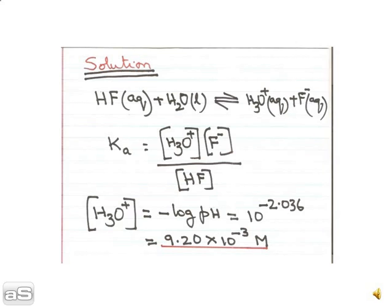We already know that if you are given the pH value, we can calculate H3O plus. We write the equation: H3O plus equals 10 to the power of minus pH, which is 10 to the power of minus 2.036. This works out to 9.2 times 10 to the power of minus 3 molar.